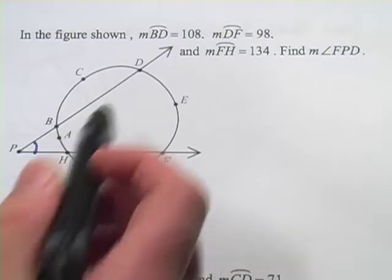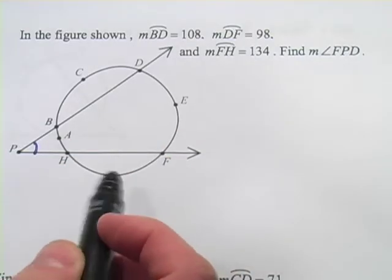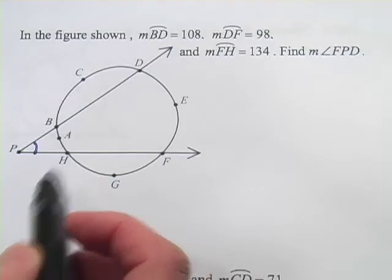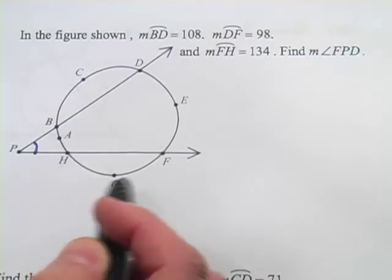And actually, you see two secant lines here. This same formula works if both lines were tangent, or if one was tangent and one was secant. We'll see that in another problem in just a minute. Let me show you the formula, the relationship that exists here.